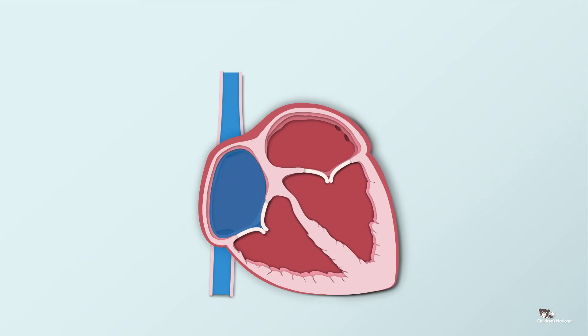From there, it goes through the tricuspid valve into the right ventricle. When the right ventricle is full, the heart muscles squeeze to push the blood through another important tube or vessel, called the main pulmonary artery.